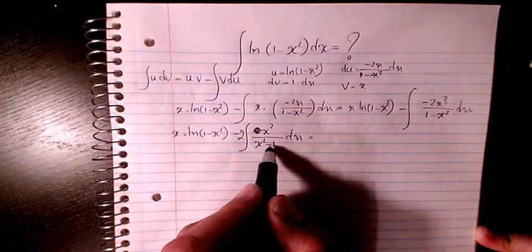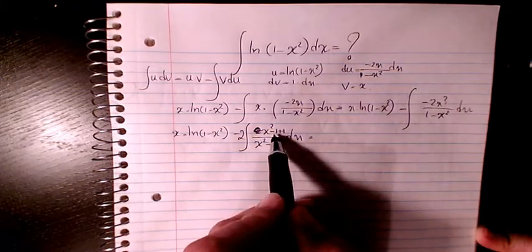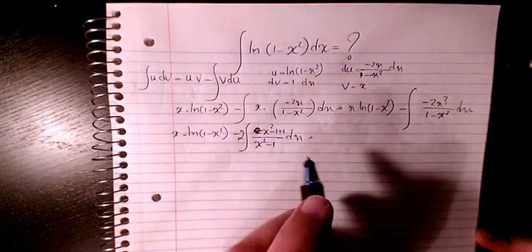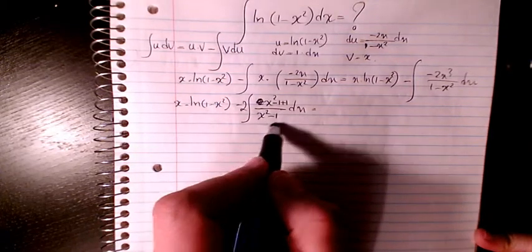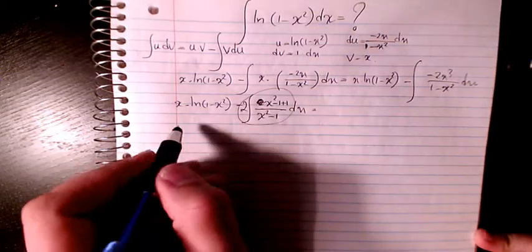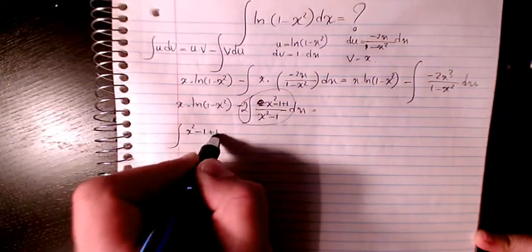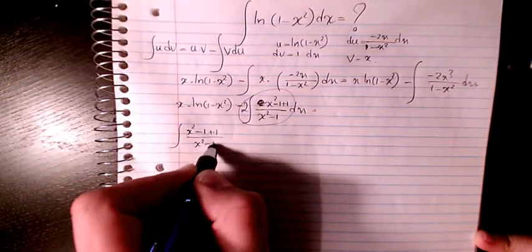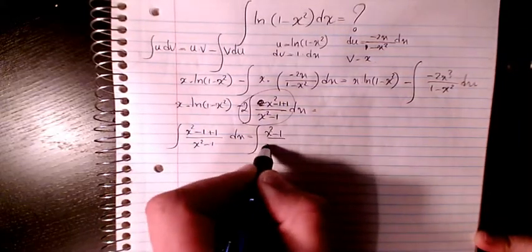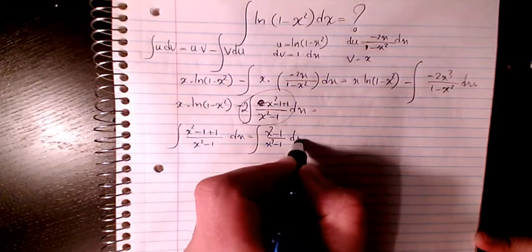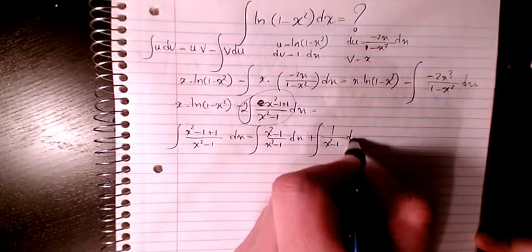For x squared divided by (x squared minus 1), I can write the numerator as (x squared minus 1) plus 1 — adding and subtracting 1. So the integral becomes the integral of (x squared minus 1 plus 1) divided by (x squared minus 1) dx, which splits into x squared minus 1 over (x squared minus 1) dx plus 1 over (x squared minus 1) dx.